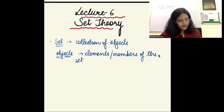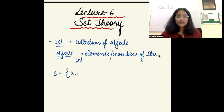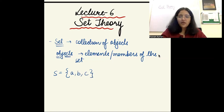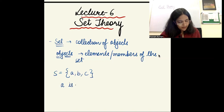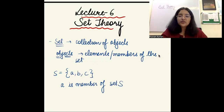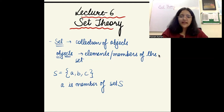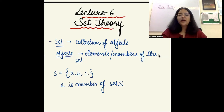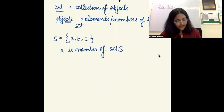Suppose I have a set S = {a, b, c}. This is how we represent a set. I will say that a is a member of set S, b is also a member of set S, and c is also a member of set S. So a set is nothing but a collection of objects, and those different objects that are part of the set we call members.